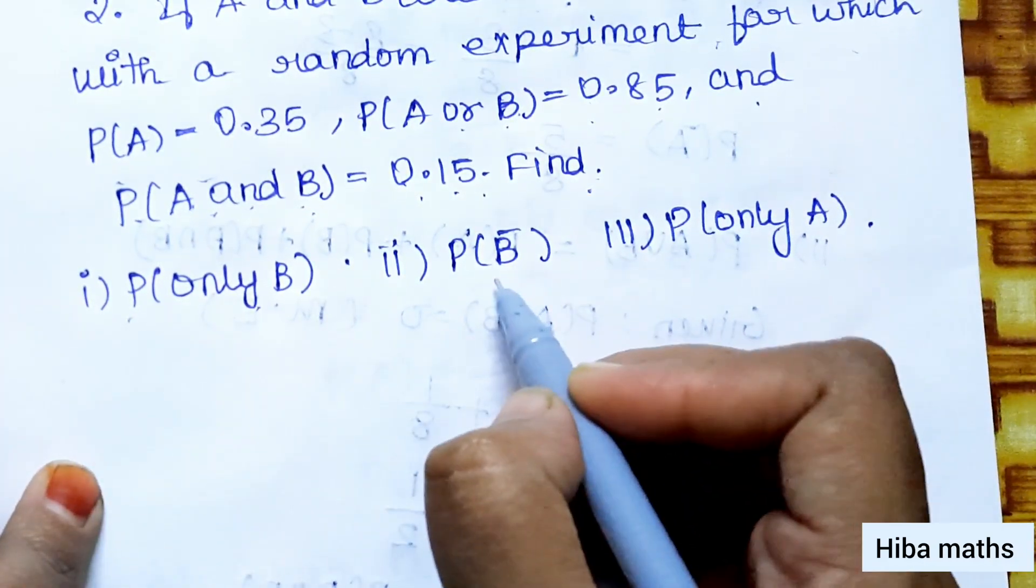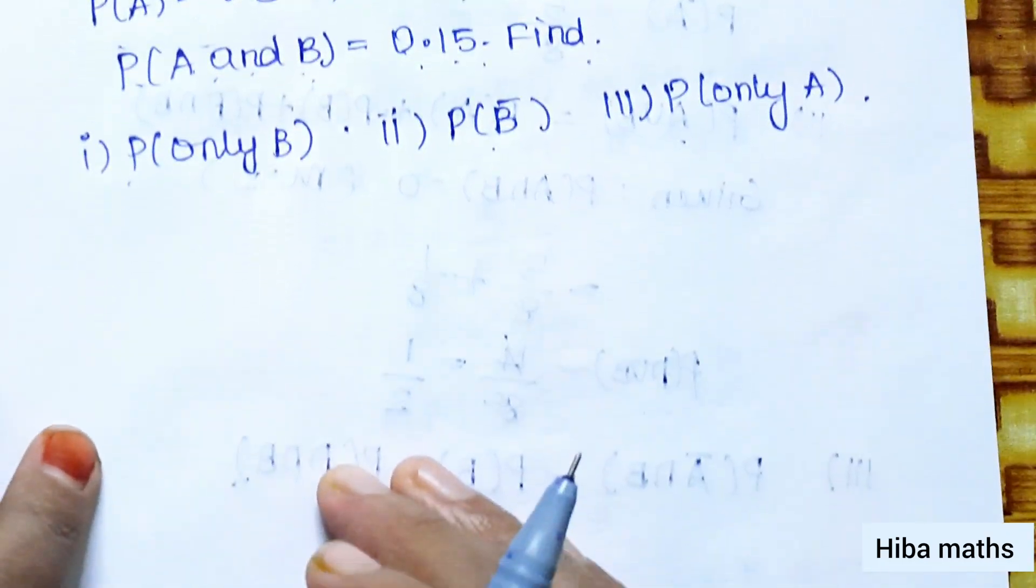Three subdivisions: P of only B, P of B bar, and P of only A.